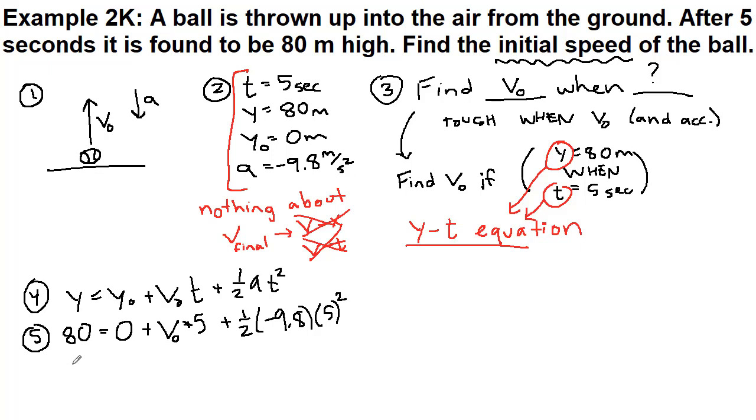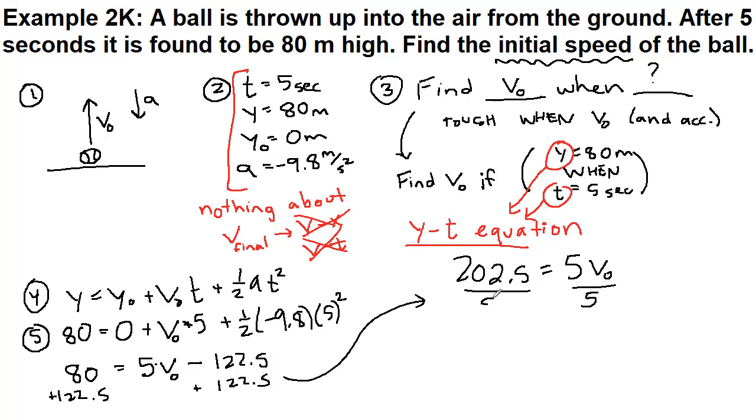All right, let's simplify this a little bit. 80 is equal to 5 v-naught, and then this whole term we can calculate, it'll be minus 122.5. We're trying to solve for v-naught, so let's add 122.5 to both sides. We have 202.5 equals 5 v-naught, so we can divide both sides by 5. The initial velocity is equal to 40.5, and it is a positive 40.5 meters per second. Initial speed, though, we don't have to include the sign.